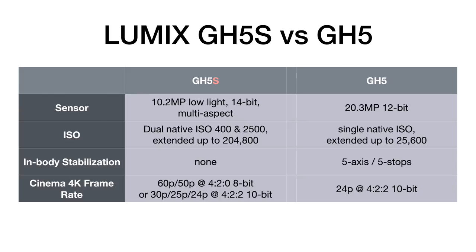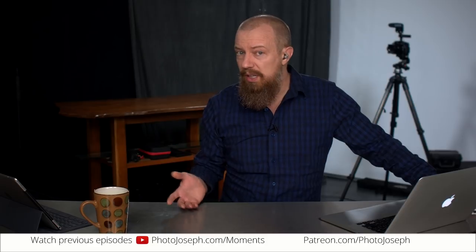Next up is the Cinema 4K frame rate. On the GH5, at Cinema 4K (C4K — slightly larger than standard 4K), the maximum was 24 frames per second at 4:2:2 10-bit. The GH5S will also shoot 24p 4:2:2 10-bit, but it'll also shoot 30p and 25p at 4:2:2 10-bit, and even 60p and 50p at 4:2:0 8-bit. If you're shooting that true cinema aspect ratio and want higher frame rates, you now have that capability. If your output is true 24p you'd leave it at 24 anyway, but you could shoot 30 and get a slight slowdown in post.